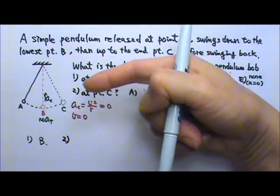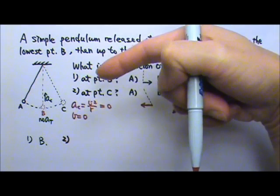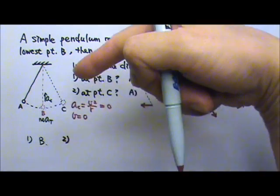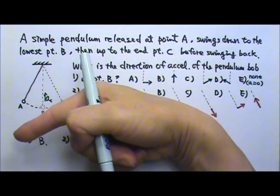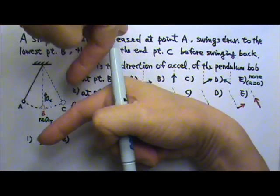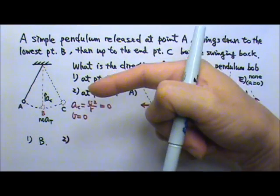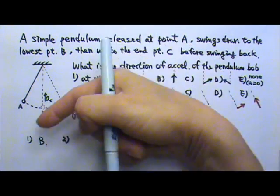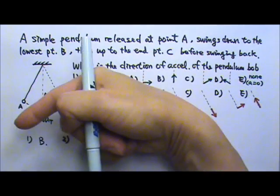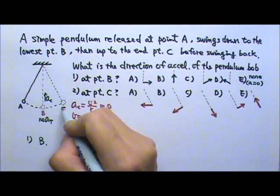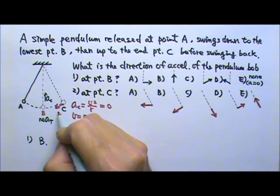Or if you look at it as it's on its way down, on its way down, it will be speeding up. That means the acceleration and the velocity, they are in the same direction. Which will also give you a tangential acceleration going down that way. So you do have tangential acceleration.